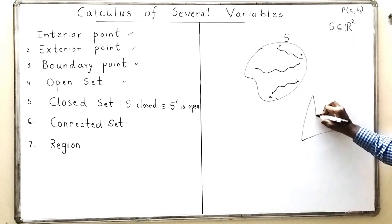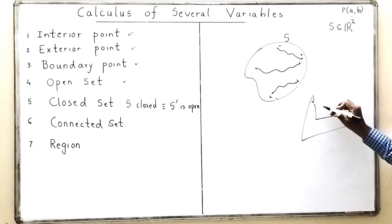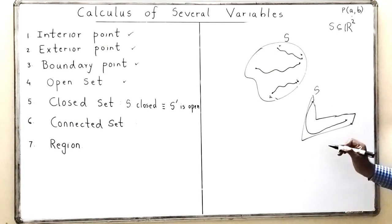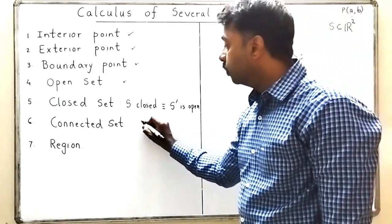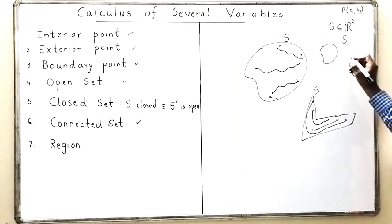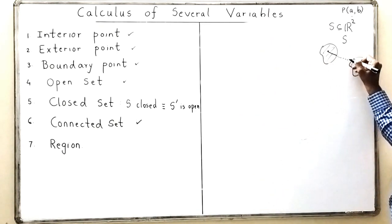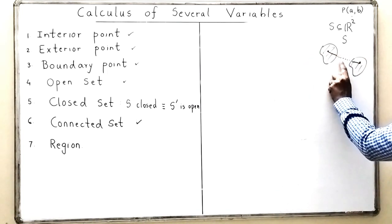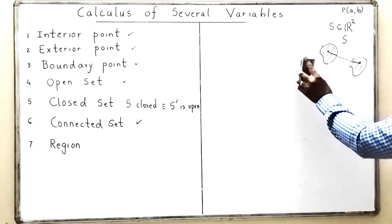If I take any pair of points A and B, and I am able to draw a path joining them which does not go outside S, then we call that set a connected set. For example, suppose I take a set S which consists of two separate pieces — clearly it is not a connected set because I am not able to join two points (one from each piece) by a path completely contained in S. So this set is a disconnected set.